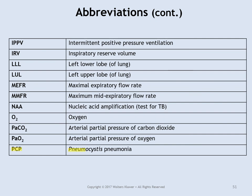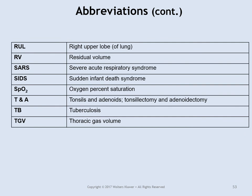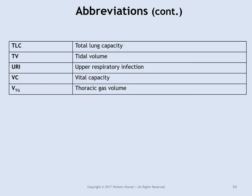PCP or Pneumocystis pneumonia is seen in HIV as an AIDS-defining infection. SARS or severe acute respiratory syndrome is another condition. URI stands for upper respiratory infections. And that is all we have today on this subject — thank you very much for your attention.